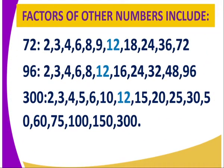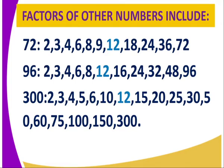Factors of other numbers — for example, the factors of 72 include 2, 3, 4, 6, 8, 9, 12 and so forth. For 96 and for 300 we have similar lists. What you should consider here is the number highlighted in blue, which is 12. The numbers above 12 — for 72 we have 18, for 96 we have 16, and for 300 we have 15 — are not common to all three. The greatest common number between 72, 96 and 300 is 12, so we say the greatest common divisor of 72, 96 and 300 is 12.